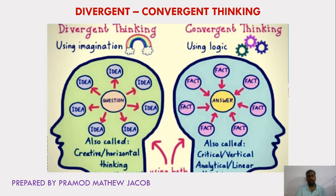Let's understand this with a comparative analysis. In divergent thinking, we use imagination. We have a problem or a question and we think about various solutions or ideas using our imagination to solve that particular problem. In divergent thinking, the designer should also have creativity, so it is also called creative thinking or horizontal thinking.